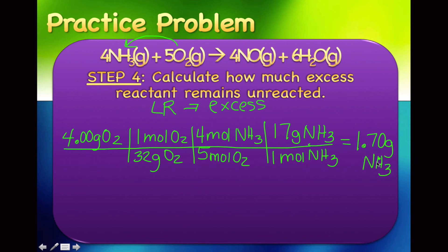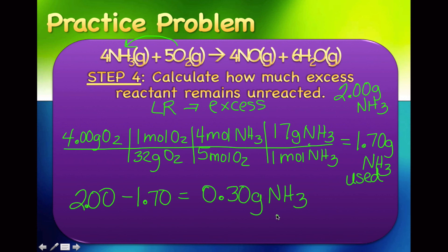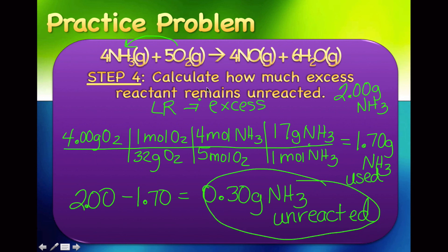That tells us 1.70 grams of ammonia was needed to react with the 4 grams of oxygen. We originally put in 2 grams of ammonia, so we subtract: 2 grams minus 1.70 grams equals 0.3 grams of ammonia left unreacted. To find unreacted excess, go from limiting reactant to excess reactant to find how much was used, then subtract from your original amount.